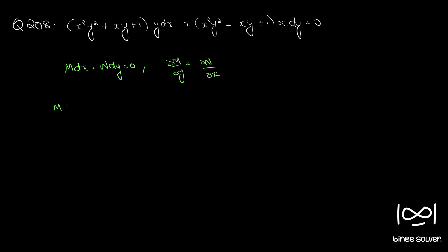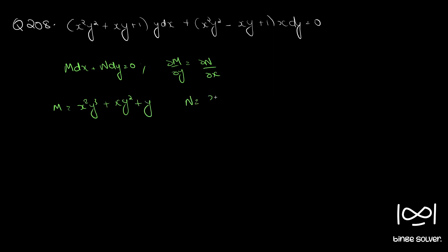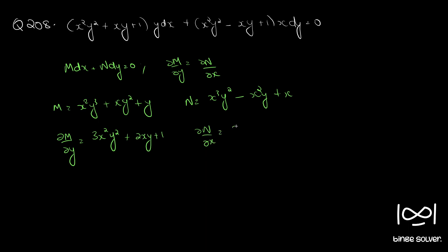Here M is x³y² + x²y³ + x²y² + xy² + y, and N is x³y² − x²y + x. Computing ∂M/∂y gives 3x²y² + 2xy + 1, and ∂N/∂x gives 3x²y² − 2xy + 1.